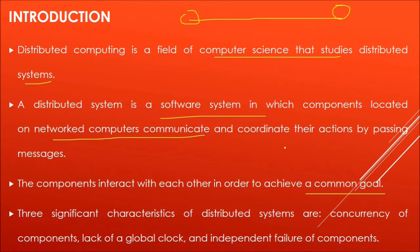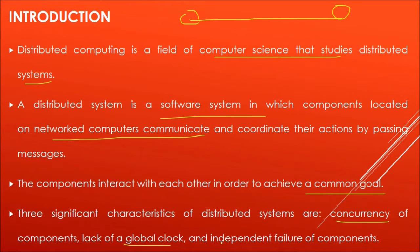Three significant characteristics of a distributed system are: concurrency of components, lack of a global clock, and independent failure of components.